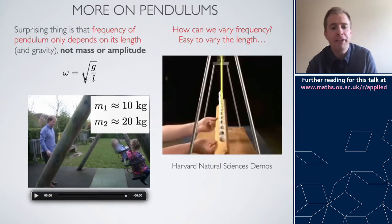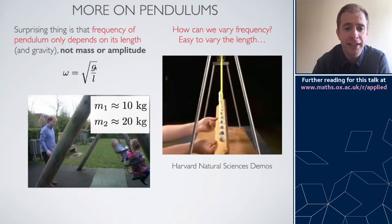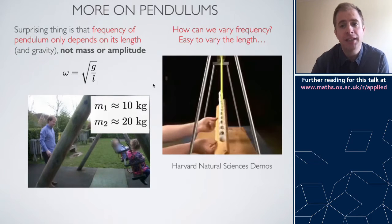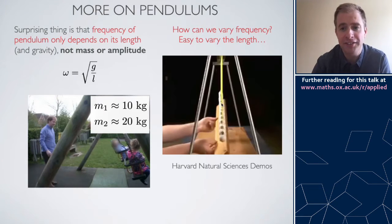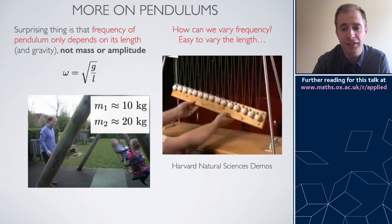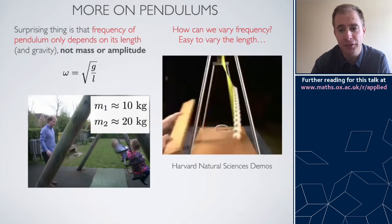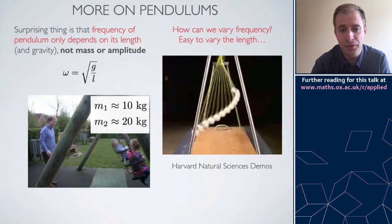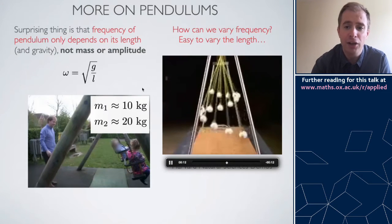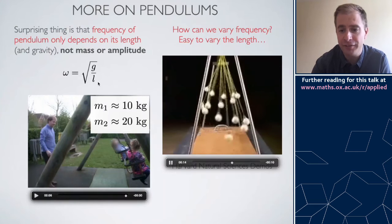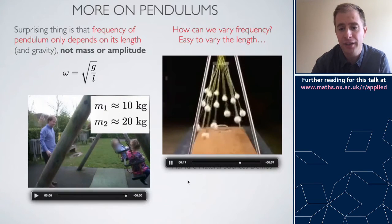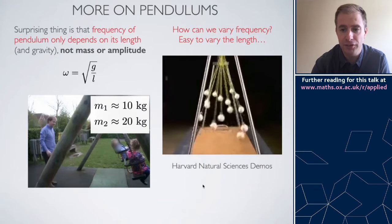To vary the frequency it's very difficult to vary g, but it's very easy to vary the length L. I'll show you a video from the Harvard Natural Sciences demos in which they take a whole series of pendula of different lengths, release them at the same time, and you'll see that as expected they have very different frequencies — those with the shortest length L oscillate most quickly, while those with longer length have a much lower frequency.